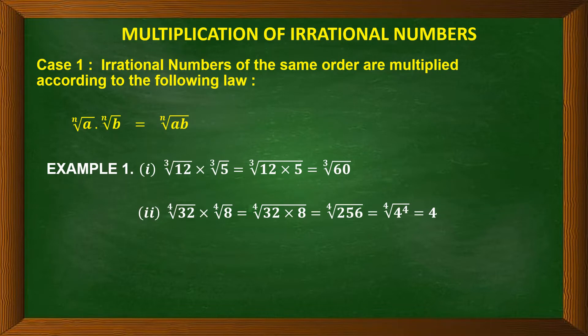Now, how to multiply two irrational numbers? There are two cases. The first case says whenever we have two irrational numbers of the same order, we multiply according to the following law: nth root of a into nth root of b is nth root of a into b. That means we find the product of a into b and that comes under the nth root. n is the order, and the order is same.